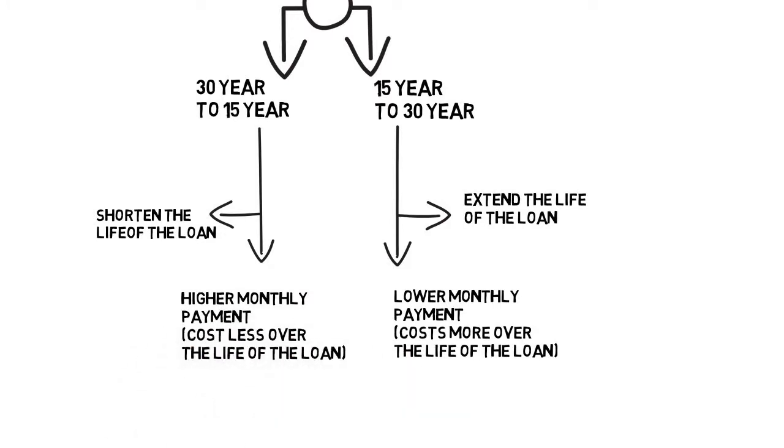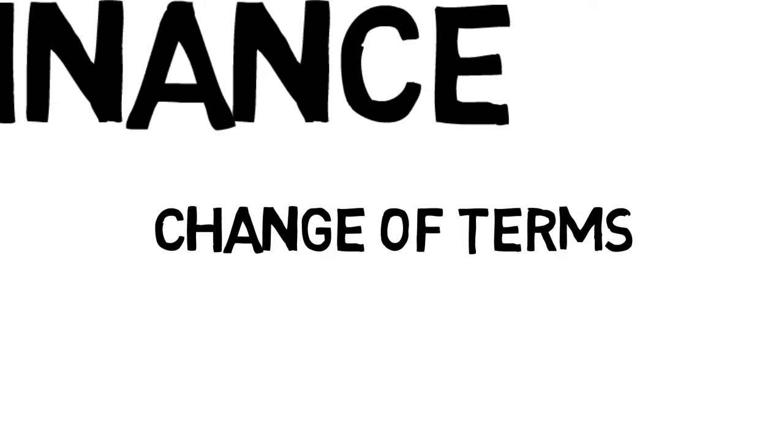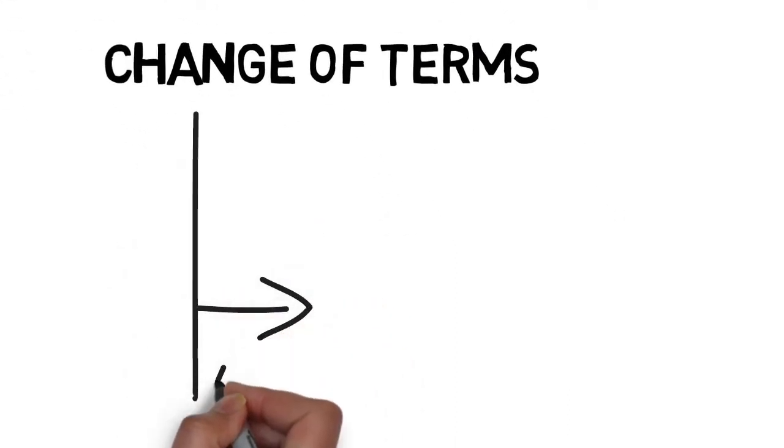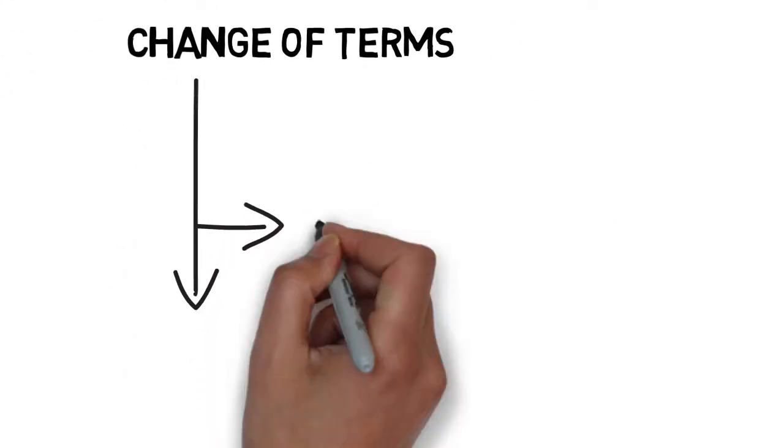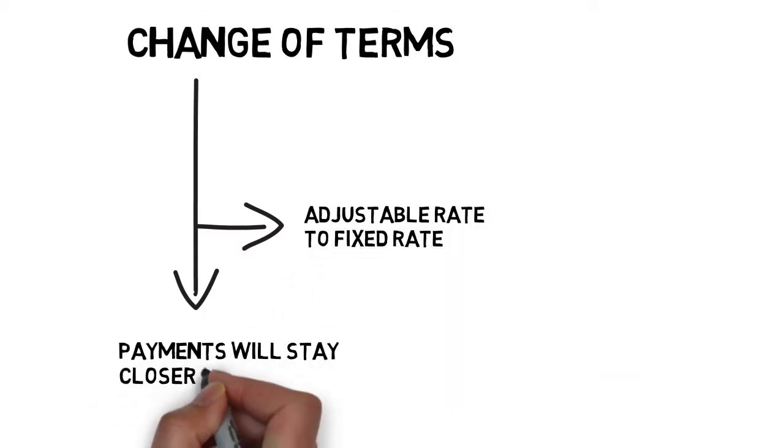If you currently have an adjustable rate, which means your interest and monthly payment can fluctuate from year to year, you may consider refinancing to a fixed rate. This will guarantee your interest will not change, keeping your monthly payment relatively the same.